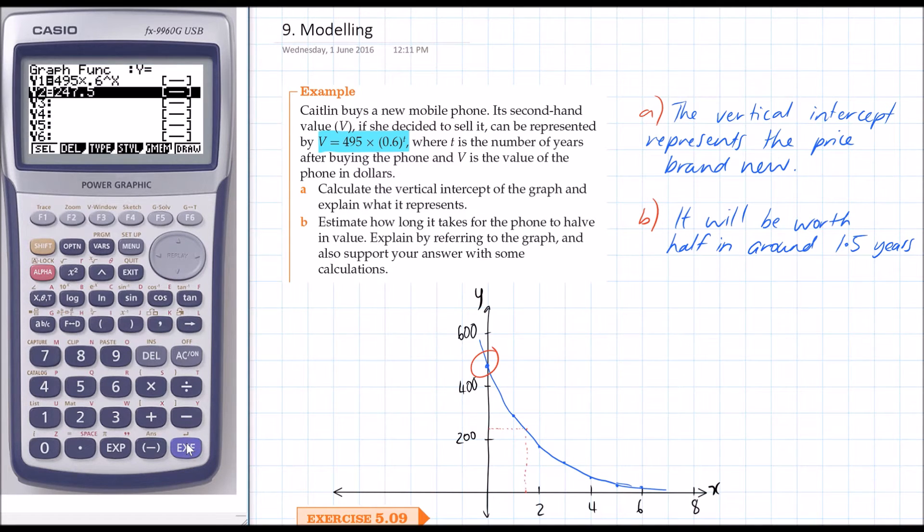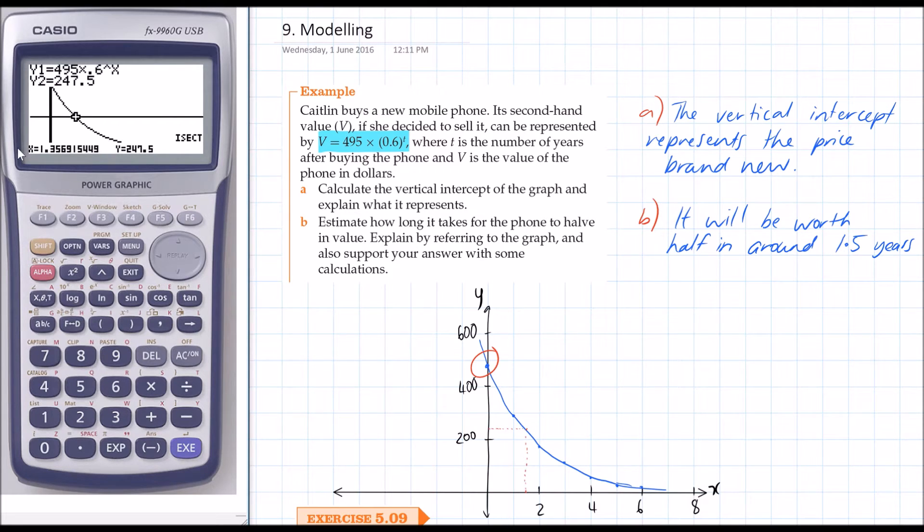Why is that one not plotting? There we go. And then we can solve for the intercept of those two. We can see on our graphics calculator, it actually comes out to 1.35.